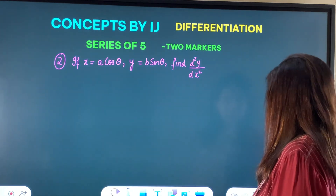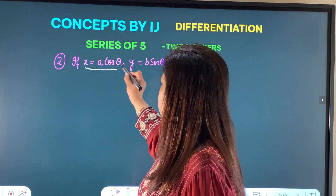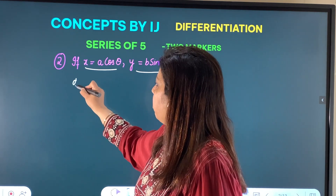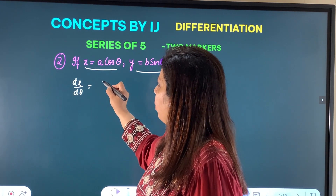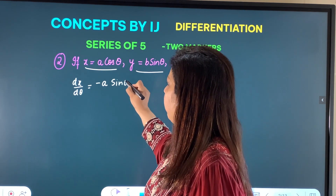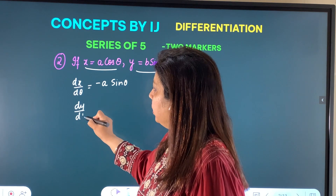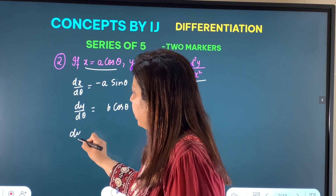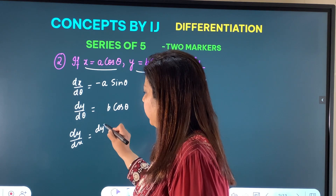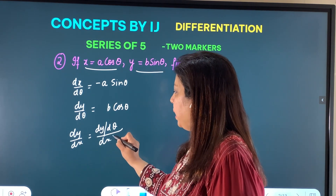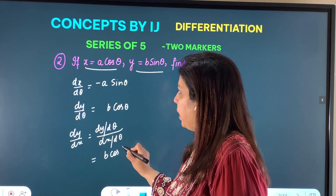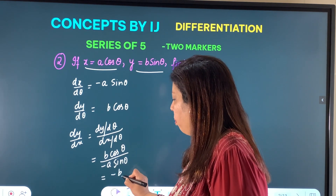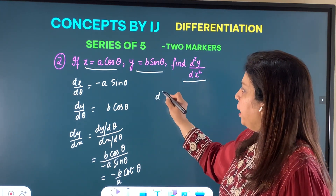Second question: x = a cosθ, y = b sinθ; find d²y/dx². This is parametric, so first we find dx/dθ = a · (−sinθ) = −a sinθ. Then dy/dθ = b cosθ. So dy/dx = (dy/dθ)/(dx/dθ) = b cosθ / (−a sinθ) = −(b/a) cotθ.